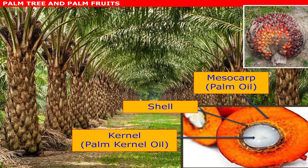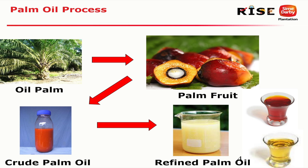From the palm plantation, after we harvest the fruit, we extract the fruit itself, then it will be sent to the mill. We'll be getting crude palm oil, and this crude palm oil will be sent to our refinery to get refined palm oil — also known as RBD palm oil, which stands for Refined, Bleached, and Deodorized.